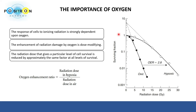The radiation dose that gives a particular level of cell survival is reduced by approximately the same factor at all levels of survival. We define a term called the Oxygen Enhancement Ratio (OER), which is the ratio between the radiation dose in hypoxia to the radiation dose in air or in oxic conditions.